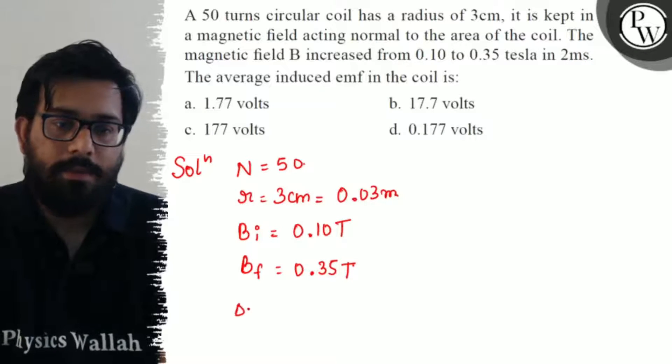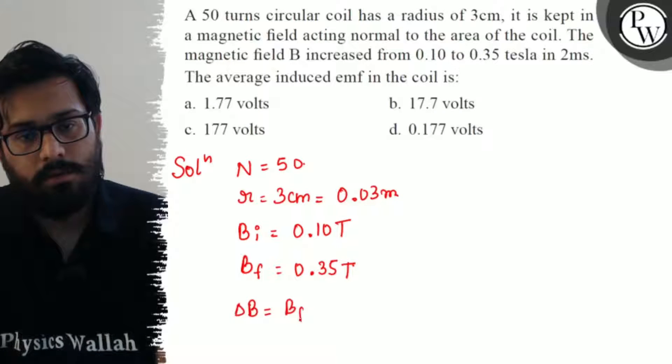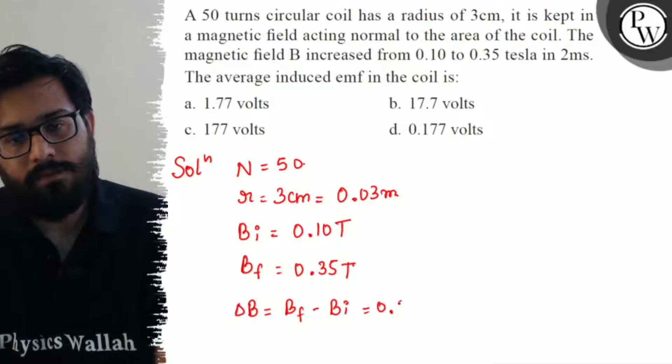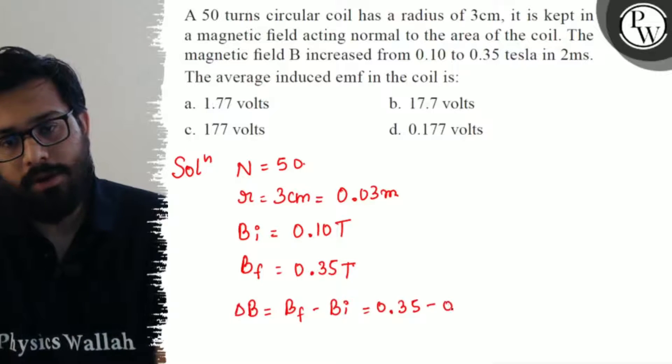Delta B can be written as B final minus B initial. Solving it, 0.35 minus 0.10.